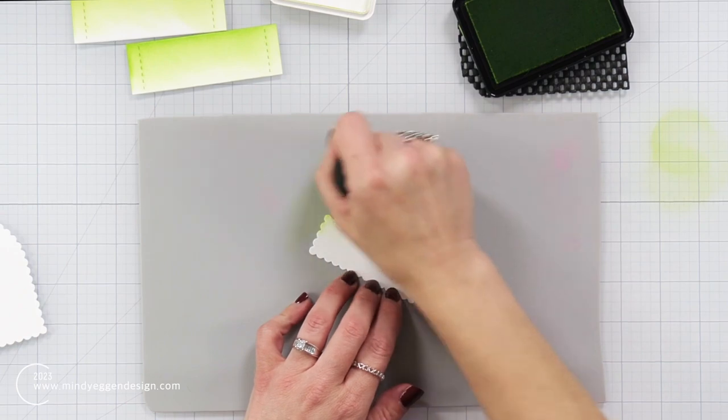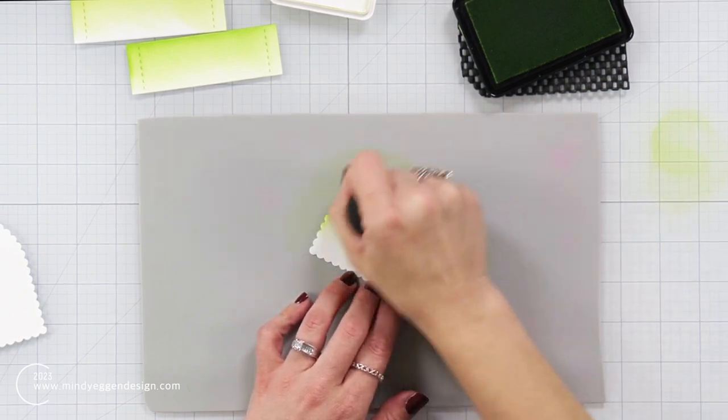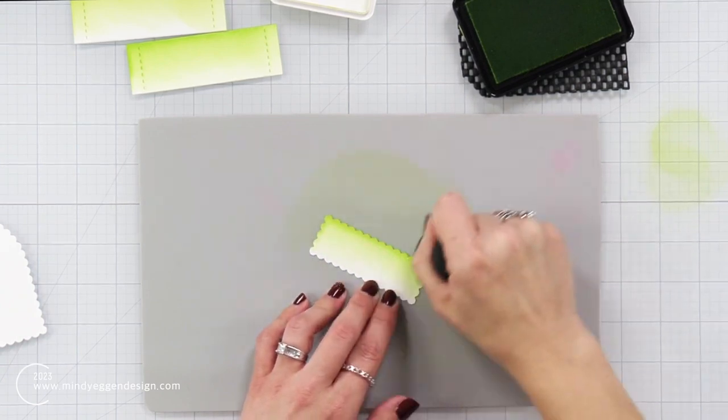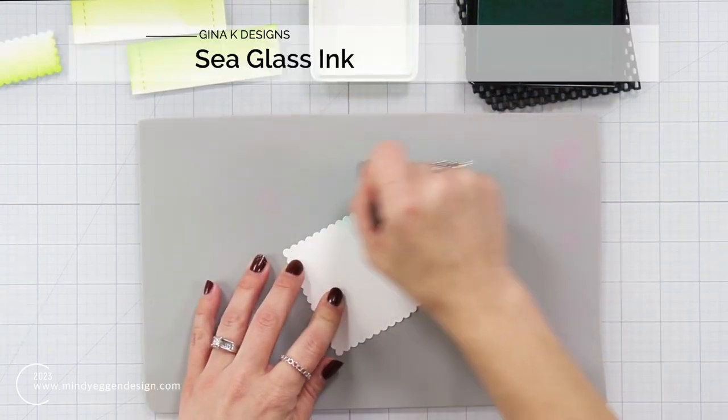Now I'm also going to add a little bit of this green to the scalloped part. Now this is where my sentiment is going to go and it's also going to be shown on the front of the box. So I wanted it to match the other pieces.